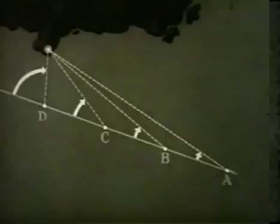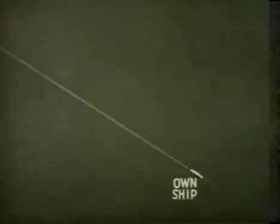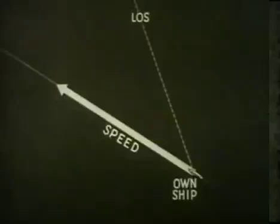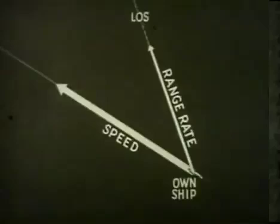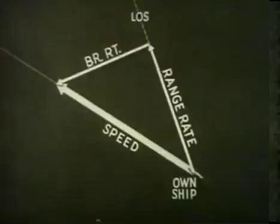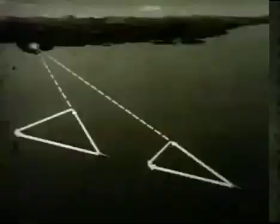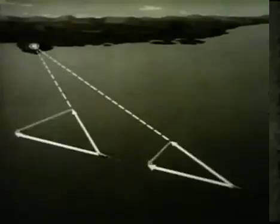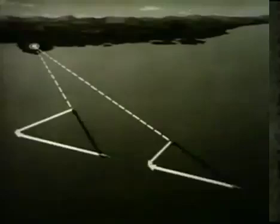These four ship positions are spaced at equal intervals of time. During the time between A and B, the change in range is greater than it is during the time between C and D — thus the rate at which range changes is not constant. Between A and B, the change in target bearing is less than it is between C and D — thus the rate at which target bearing changes is not constant. Solving the fire control problem requires continuous information of the existing rates of change. This is a vector problem in which we know own ship's course and speed, shown by the length and direction of its speed vector. The rate of change in range, or range rate, is the component along the line of sight. The rate of change in target bearing, or bearing rate, is the component perpendicular to the line of sight.